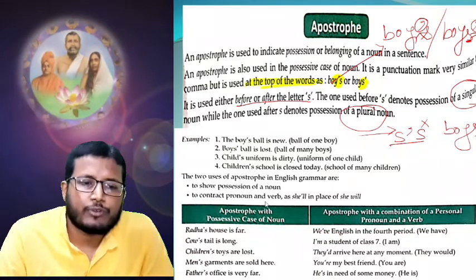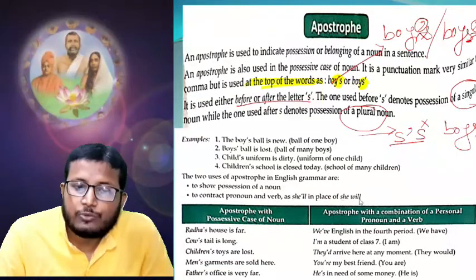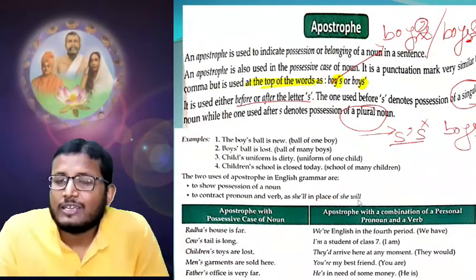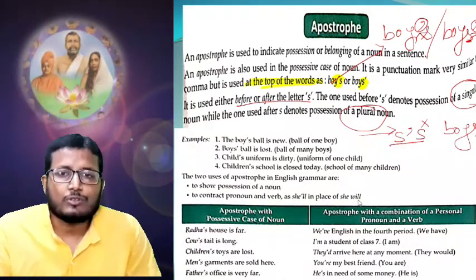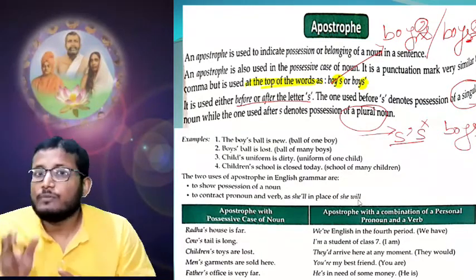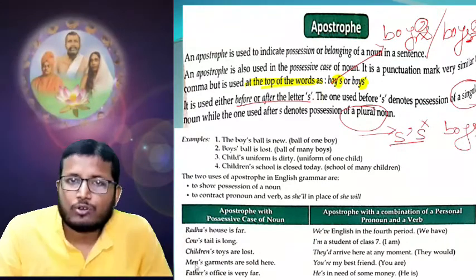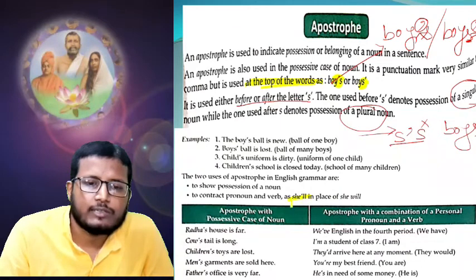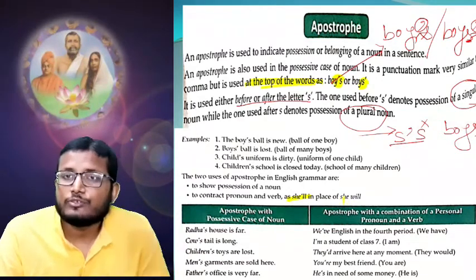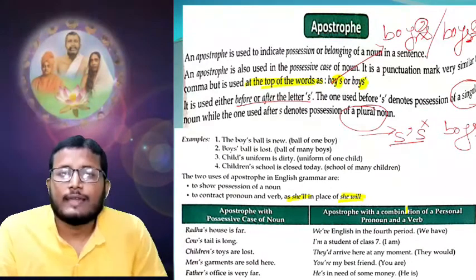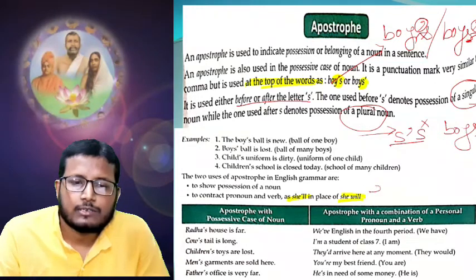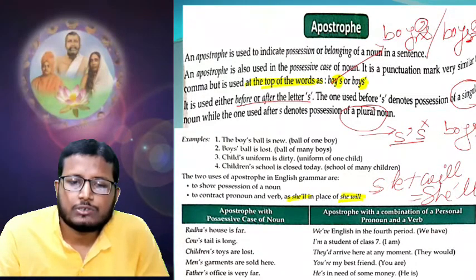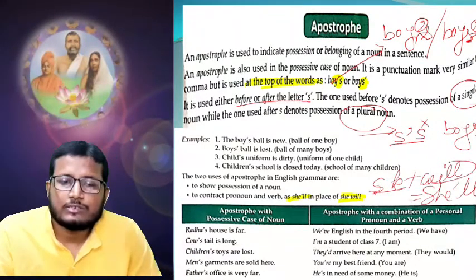The two uses of apostrophe in English grammar are: one, to show possession of a noun; and two, to contract pronoun or verb — as in 'she'll' in place of 'she will'. Here we come to know more: the apostrophe is used not only for possession or belonging, but also to make a combination with the subject and auxiliary word. For example, 'she'll' — she plus will equals she'll.